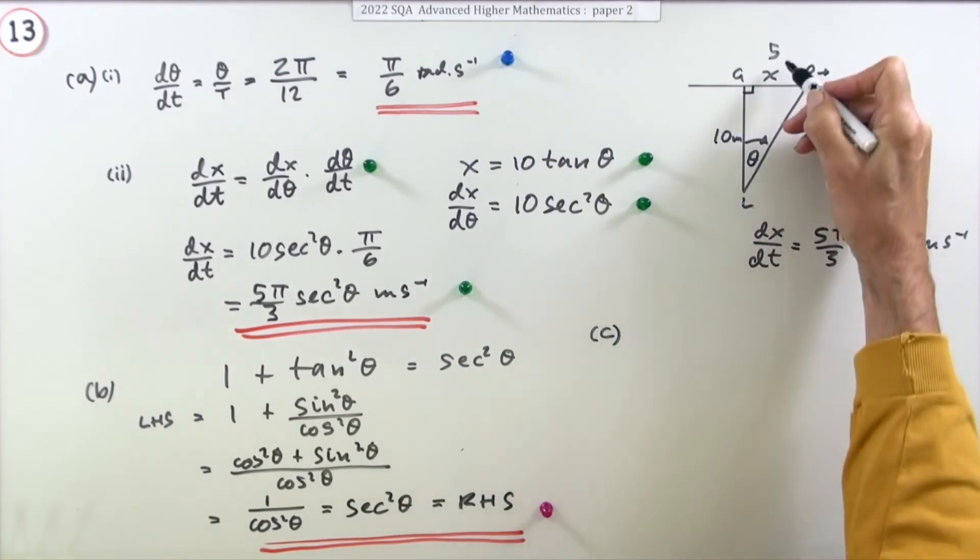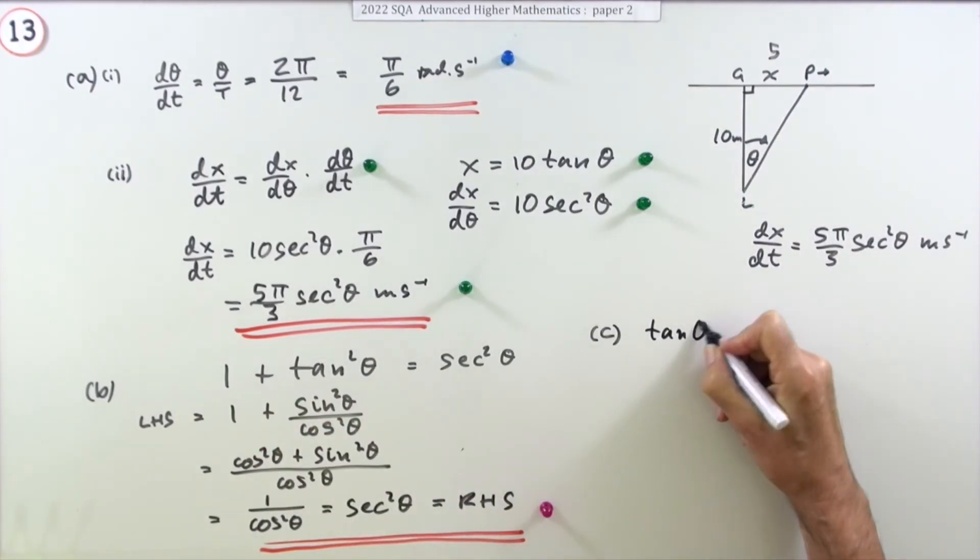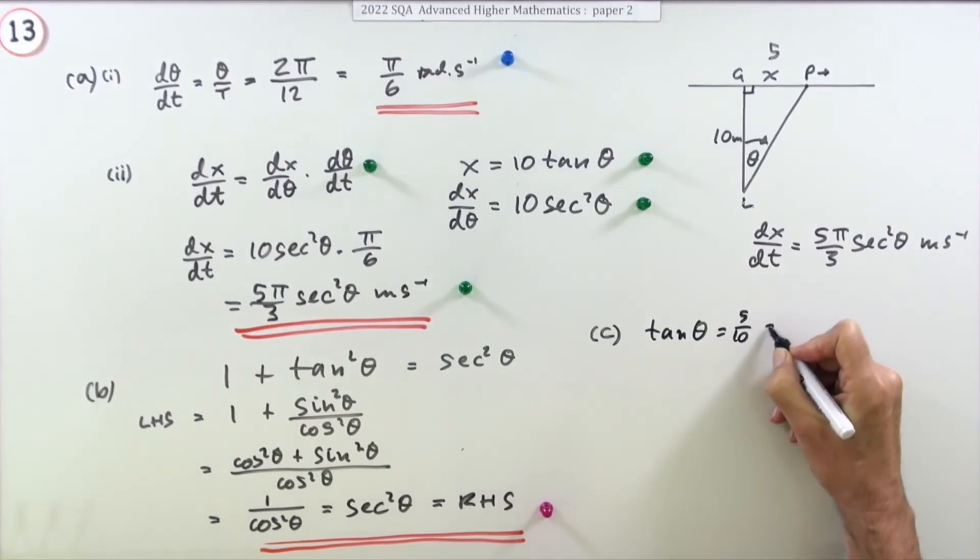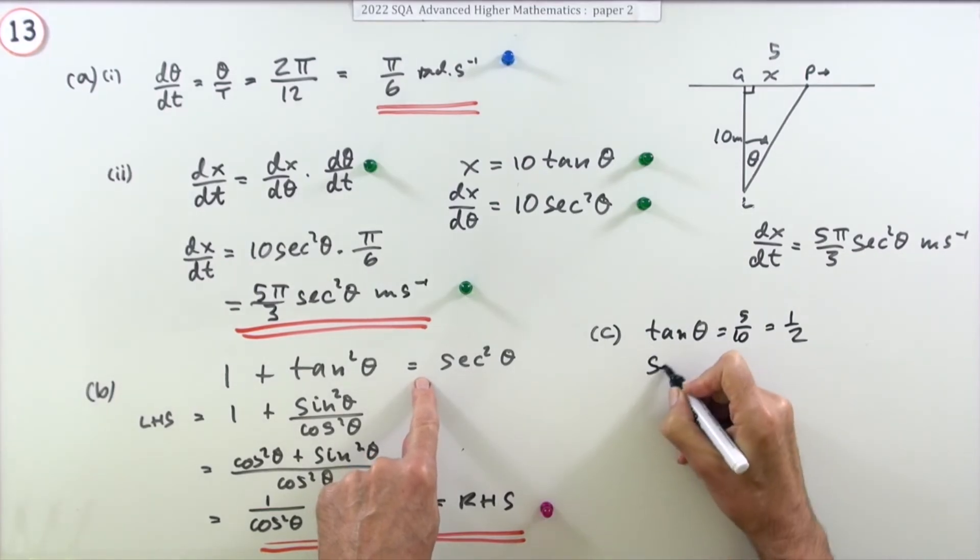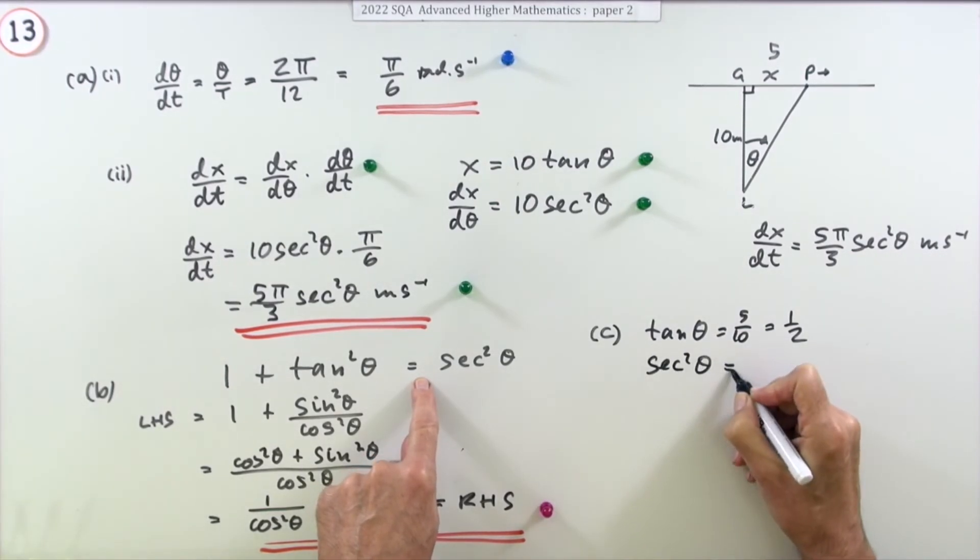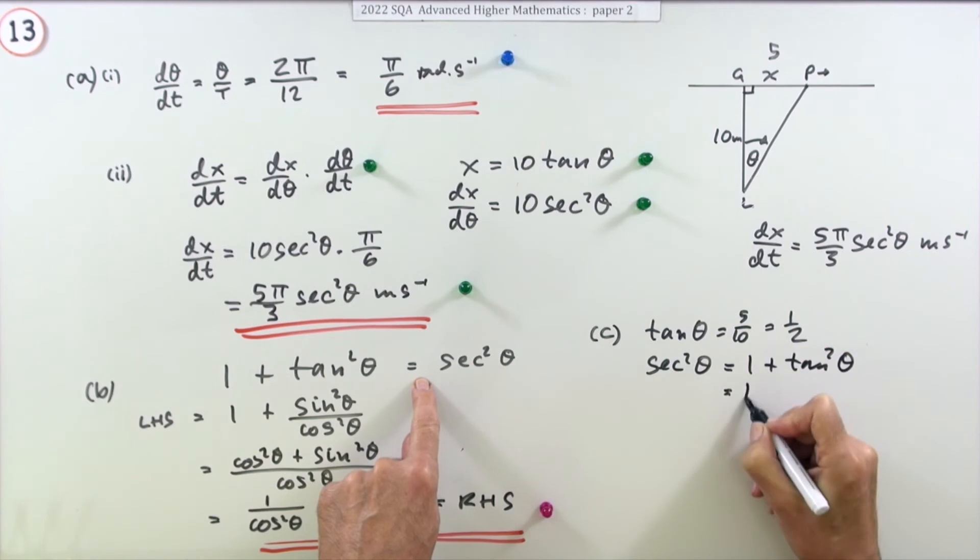Well, straight away, those two make tan, so you could say this: well, tan θ is 5 upon 10, which is a half. And you could use the relation given in part B by saying, well, that means that sec² θ will be 1 + tan² θ, which is 1 + a quarter, which is 5 upon 4.